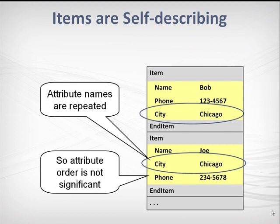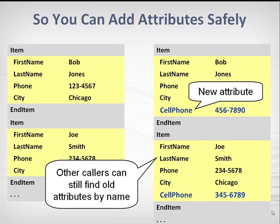The second reason for using lists is that the connector output is self-describing, where each item includes its own copy of the attribute names. Callers process the item by using these attribute names. So it's safe to add new attributes any time without upsetting other callers of the service — they can still find the attributes they need by name. This is a big advantage over schema-based systems, where you have to recompile or reprogram all of the service clients every time you want to add a new field to the response.